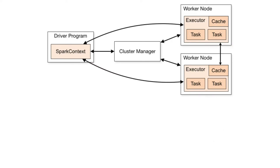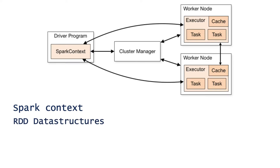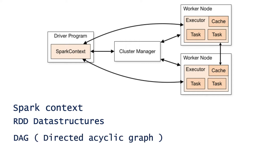The workflow begins from the driver program. When the Spark program is submitted, the driver program in the master node initializes the Spark context. The Spark context works with the cluster manager and represents the connection to the Spark cluster — it is used to create RDD data structures. Once initiated, it converts the Spark program containing code, transformations, and actions into a DAG. DAG stands for Directed Acyclic Graph and performs a sequence of computations on the data.